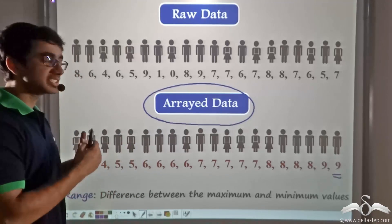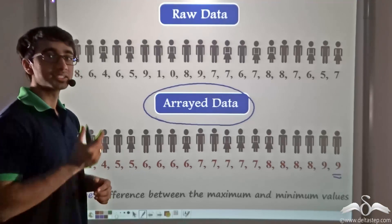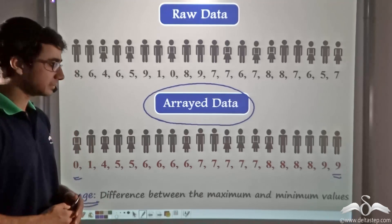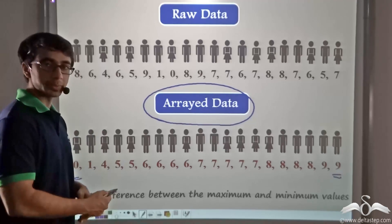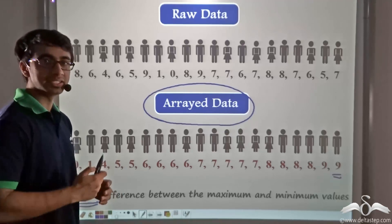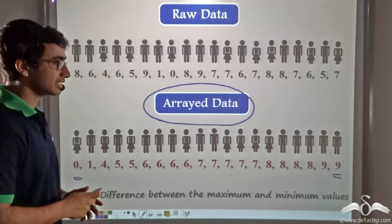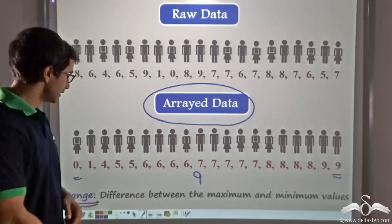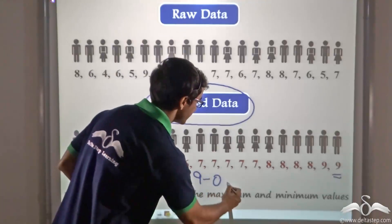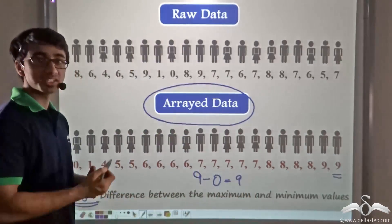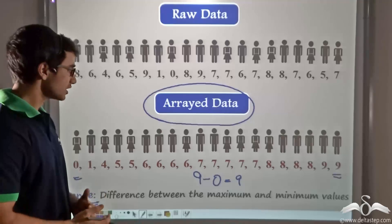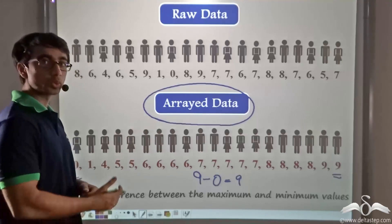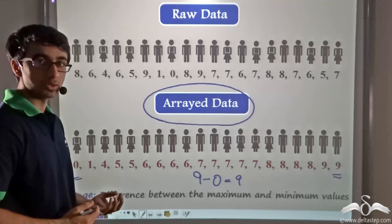After arranging the data in a particular fashion, another term comes into play: the range of data. The range of data is the difference between the maximum and minimum values in the given data set. In this case, the maximum value is 9 and the minimum value is 0. Thus, 9 minus 0 gives us 9, which is the range of the data set. From array data, it is very easy to find what the highest and lowest values are, and thus very easy to find the range.